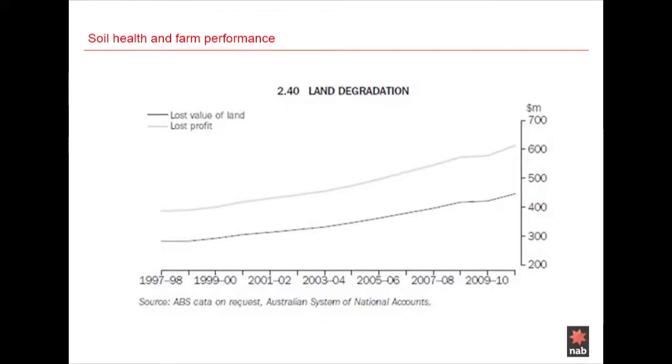For Australian agriculture, one of the most significant limiting factors for productivity is water — and water is natural capital. Likewise, good soils are critical for the productivity of agribusinesses. ABS estimates of the incremental effect of land degradation on the value of land and lost profits from agricultural production are sobering. Over the past 10 years, the cost of land degradation has increased significantly, and in 2010 and 2011 it cost more than $600 million in lost profits.